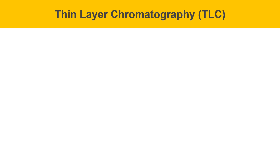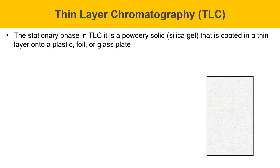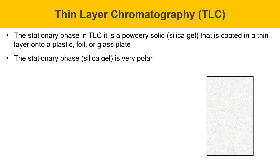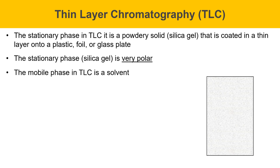Thin layer chromatography, or TLC, is one specific type of chromatography. The stationary phase in TLC is a powdery solid called silica gel, coated onto a thin layer of plastic, foil, or a glass plate. Silica gel is very polar — its surface is covered in OH groups. These form strong hydrogen bonds with molecules that contain oxygen or nitrogen lone pairs, and can also form dipole-dipole interactions. So polar molecules stick more strongly to silica gel, whereas non-polar molecules stick less strongly and move faster through it. The mobile phase in TLC is a solvent.